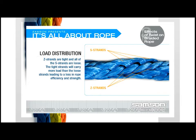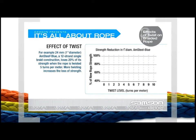Rope strength is decreased with the amount of twist induced into the rope. The effect of twist varies with the fiber type, diameter, and construction of the rope. This graph shows the data for 24mm (1-inch diameter) Amsteel Blue, a 12-strand single braid construction. It illustrates how little twist it takes to affect the strength of the rope — when the rope is twisted 5 turns per meter, it has lost 20% of its strength. More twisting increases the loss of strength.